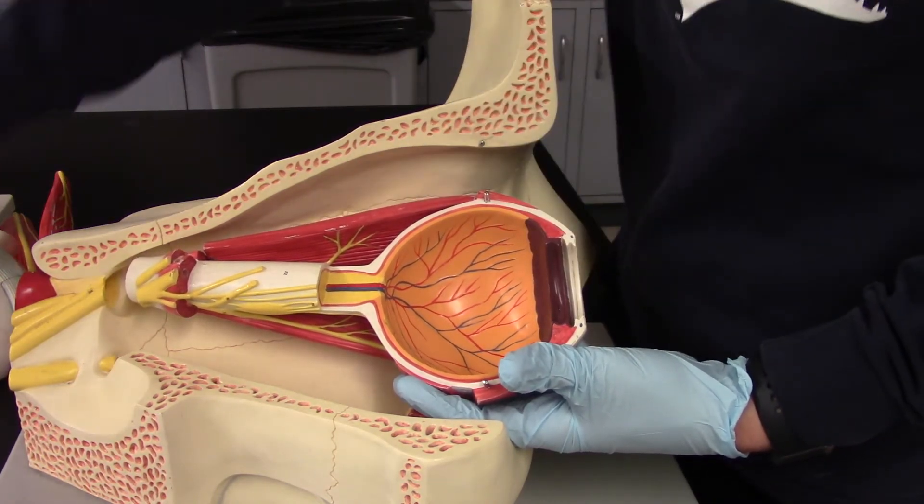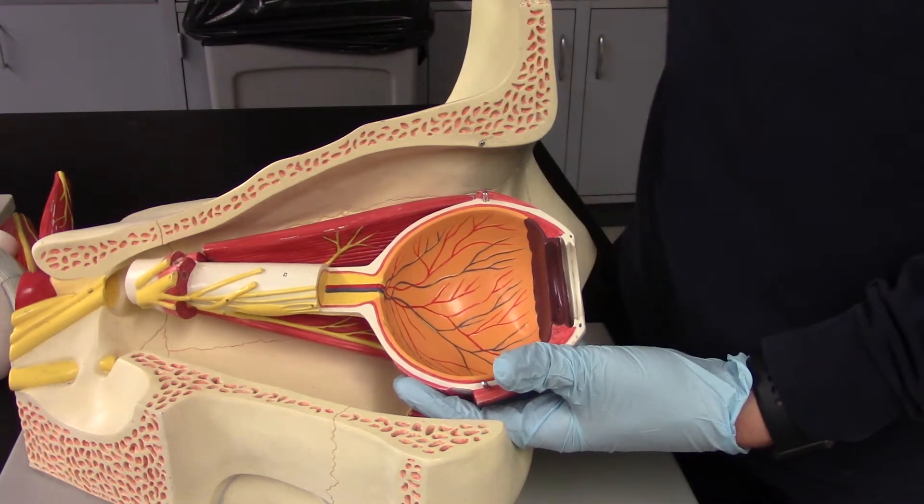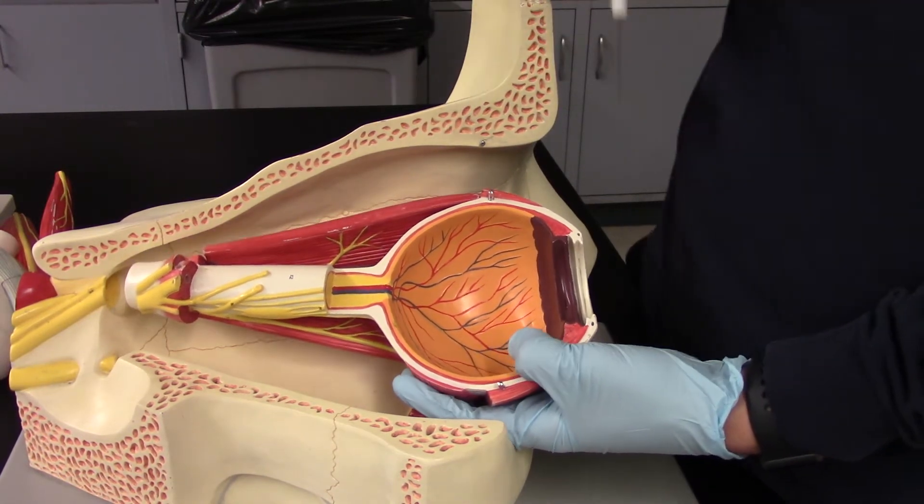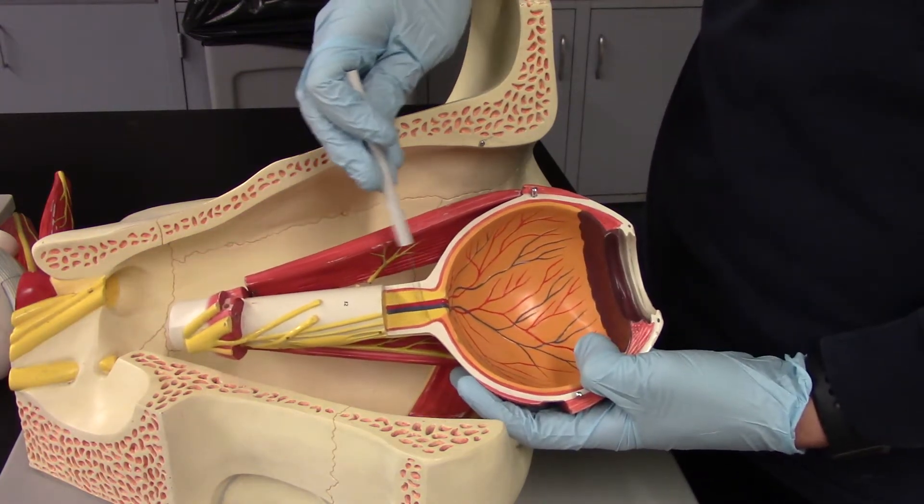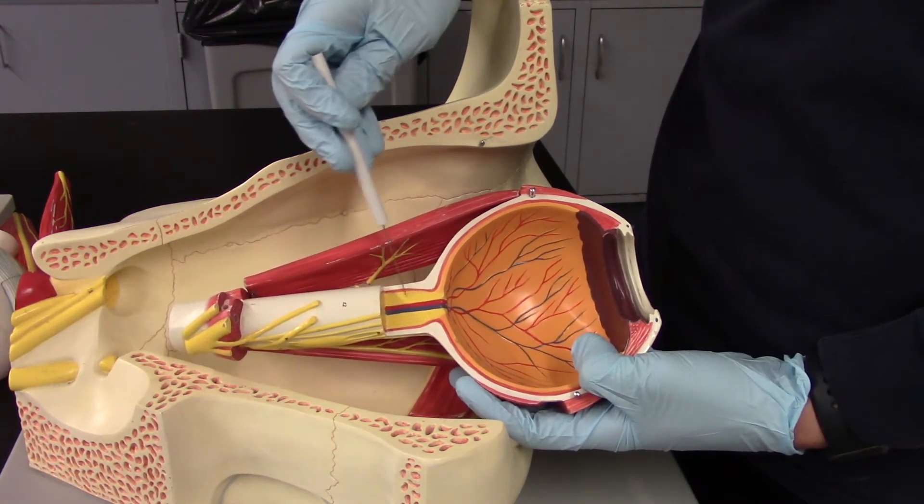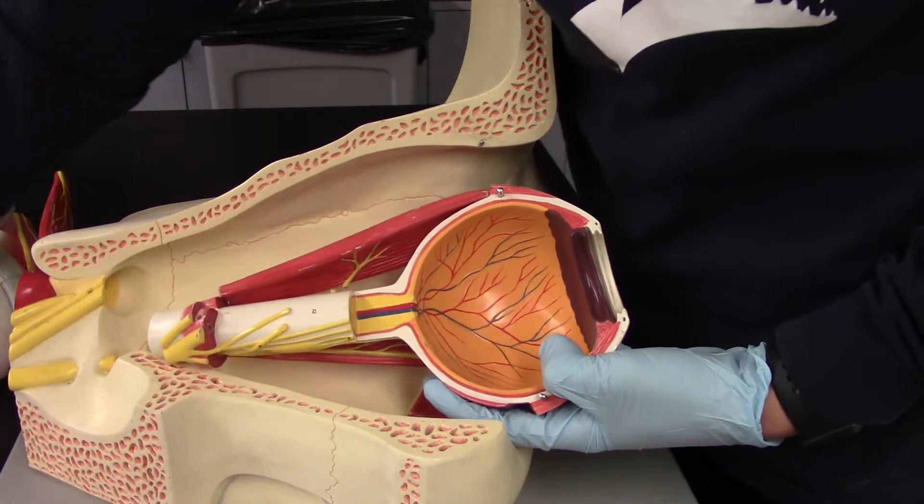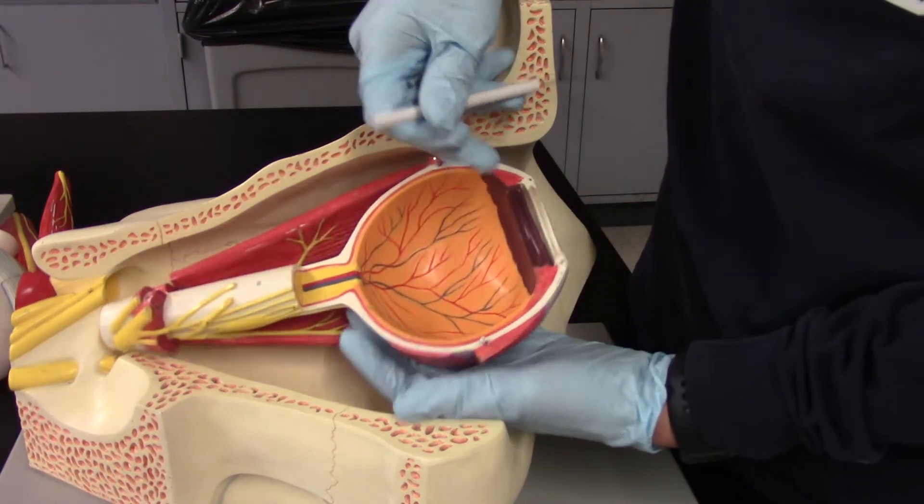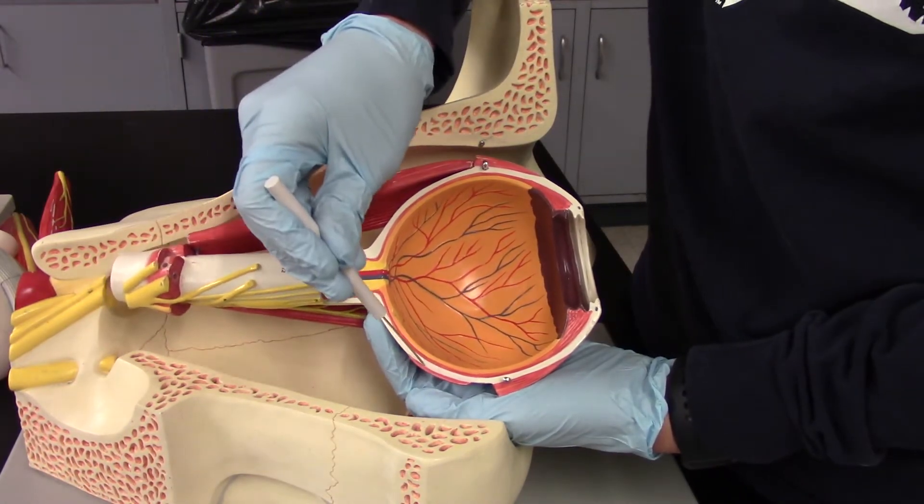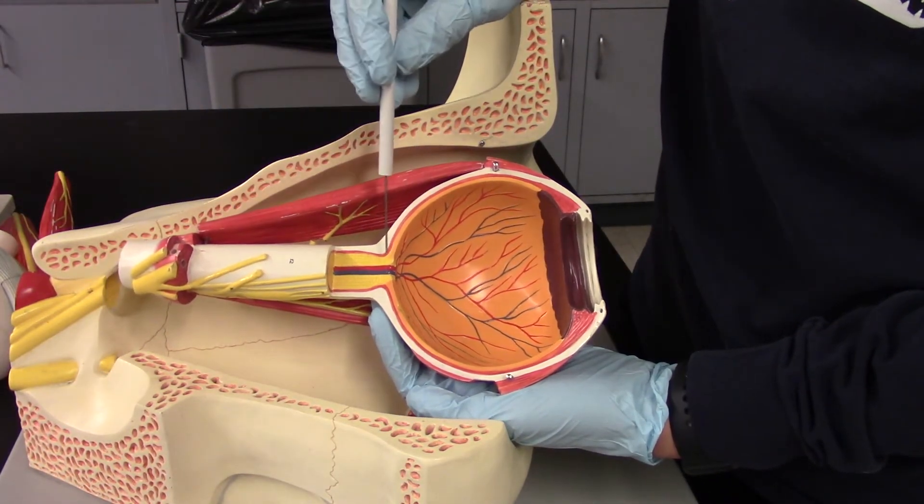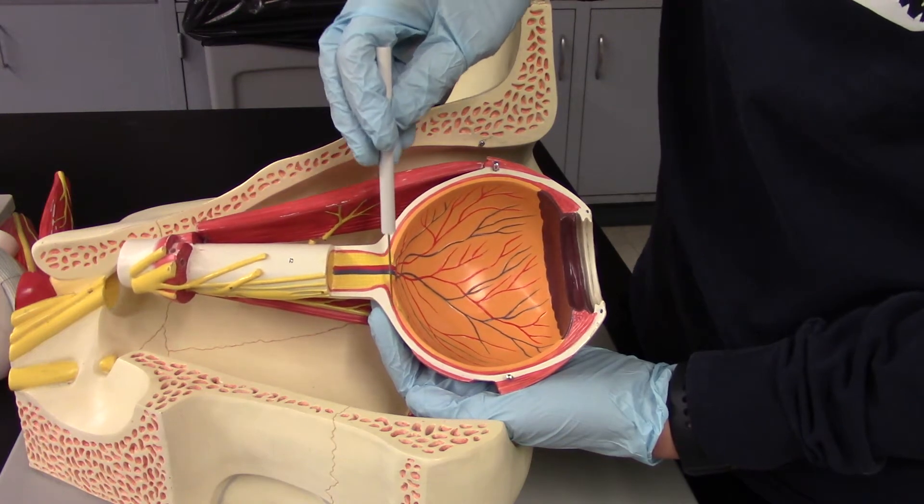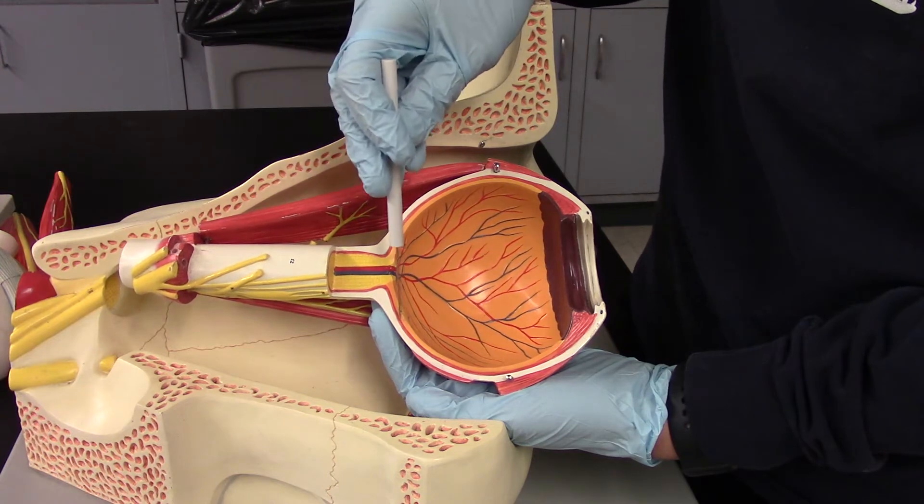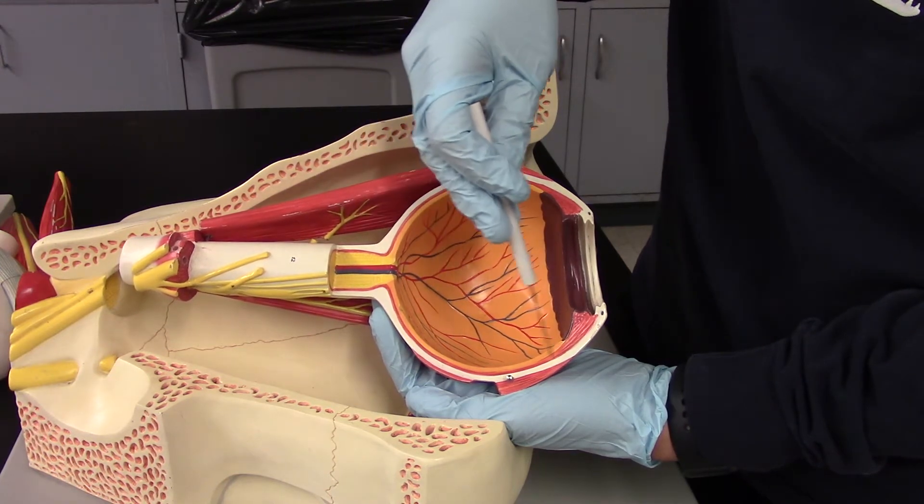Next up, we have the lens. It's going to be this giant kind of rock structure in the back of your eye. Then we have our optic nerve, which is going to be in the back. And then we have three tunics. Our fibrous, vascular, and neural tunics. Our fibrous tunic is going to be this white layer. Our vascular tunic is going to be this red layer. And our neural tunic is going to be this orangish layer.